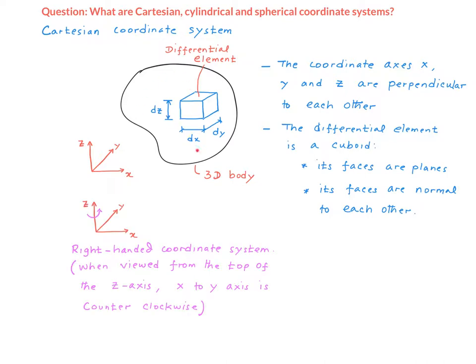Let's say we have a three-dimensional body here, and if I want to represent a point on this body, I could use this Cartesian coordinate system. So this is a little picture of the Cartesian coordinate system: x, y, z.